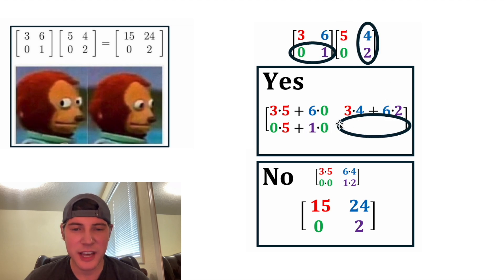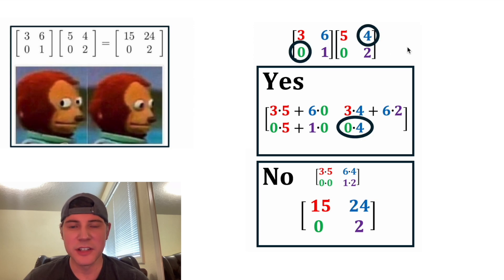And for the last one, since it's the second row, second column, we're going to do second row, second column. This 0 is going to get multiplied by 4, and then the 1 is going to get multiplied by 2. So it'll be 0 times 4 plus 1 times 2.